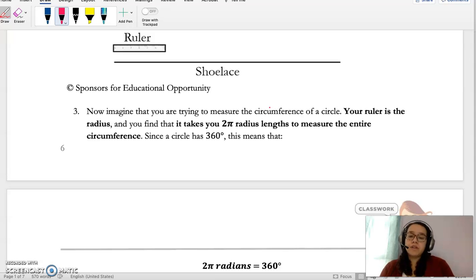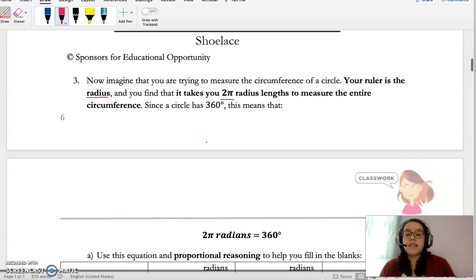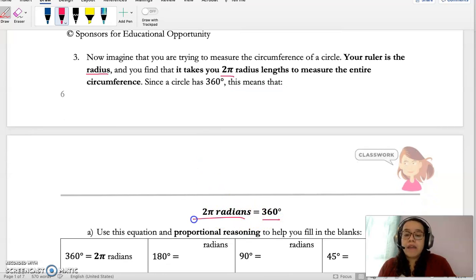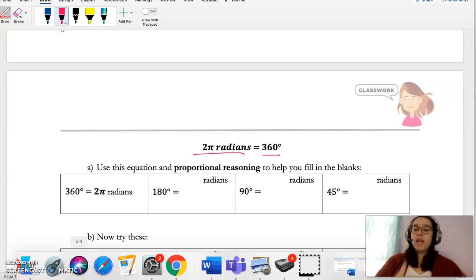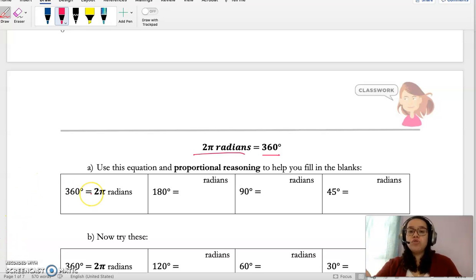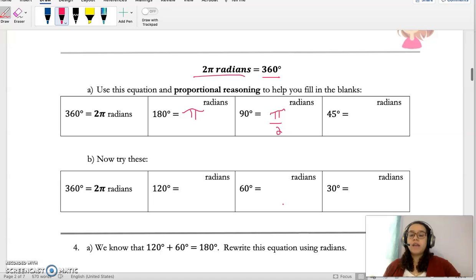So number three, now imagine that you are trying to measure the circumference of the circle. Your ruler is the radius of the circle. And you find it takes you two pi times the radius length to measure the entire circumference. Since the circle has 360 degrees, that means that 360 degrees is equal to two pi radians. If you remember from class, we remember that. We recall that conversion. And then from there, well, if we know that 360 degrees is two pi, how much is 180? Well, 180 is half of 360. So we're going to do two pi over two. Well, that means 180 is equal to pi radians. And then again, 90 is half of 180. So half of pi. So 90 is pi over two radians. And so you continue to use that proportion and complete the chart.